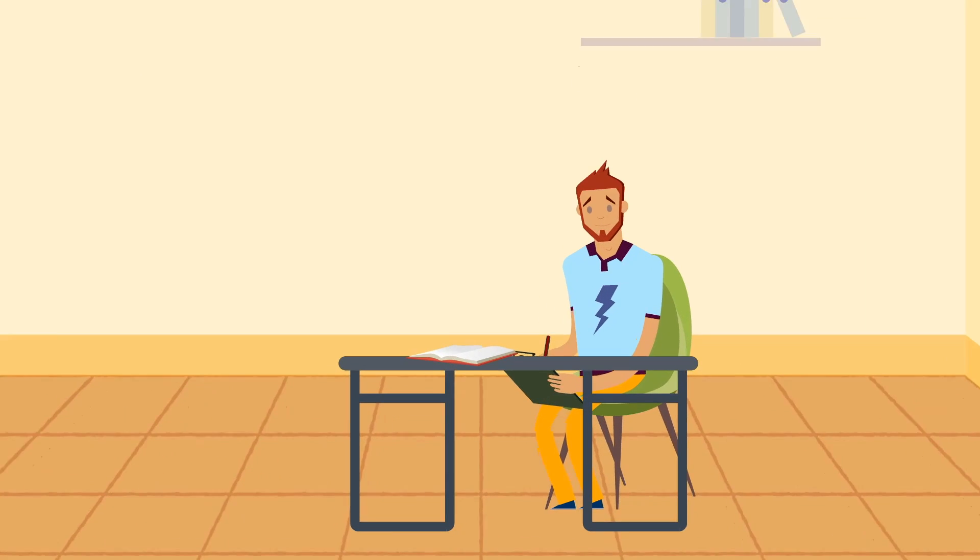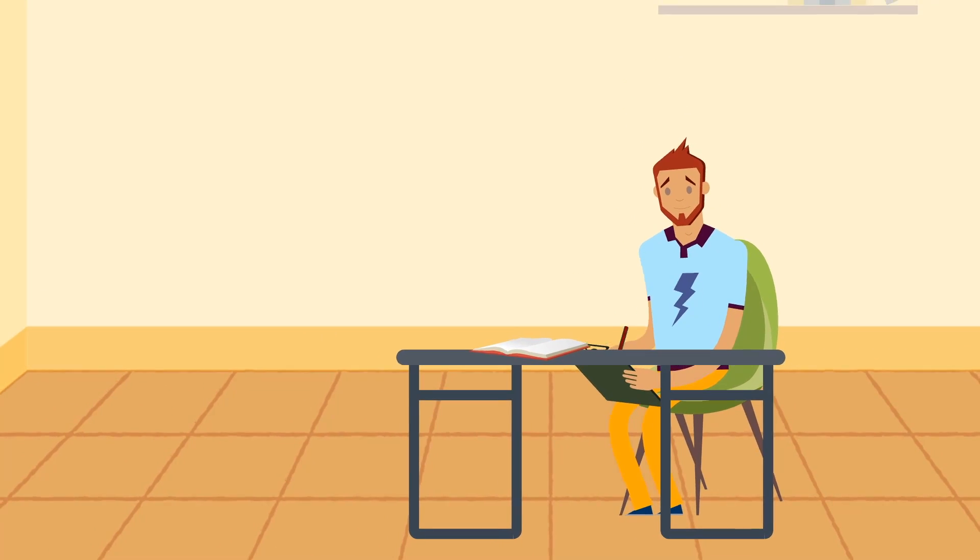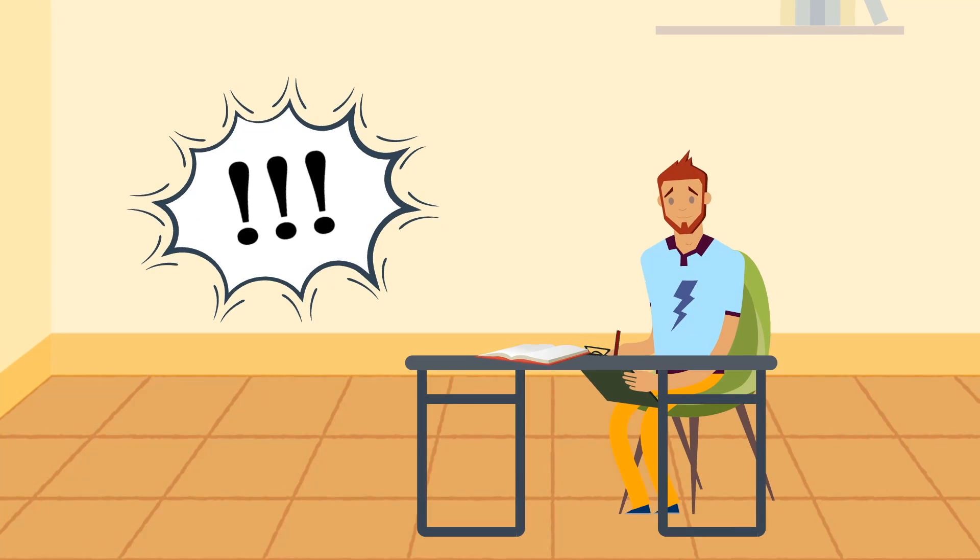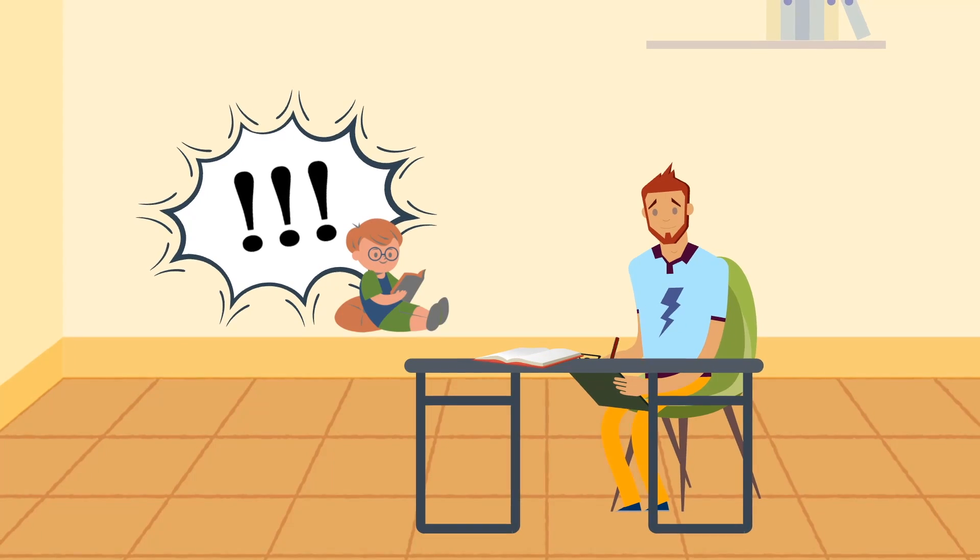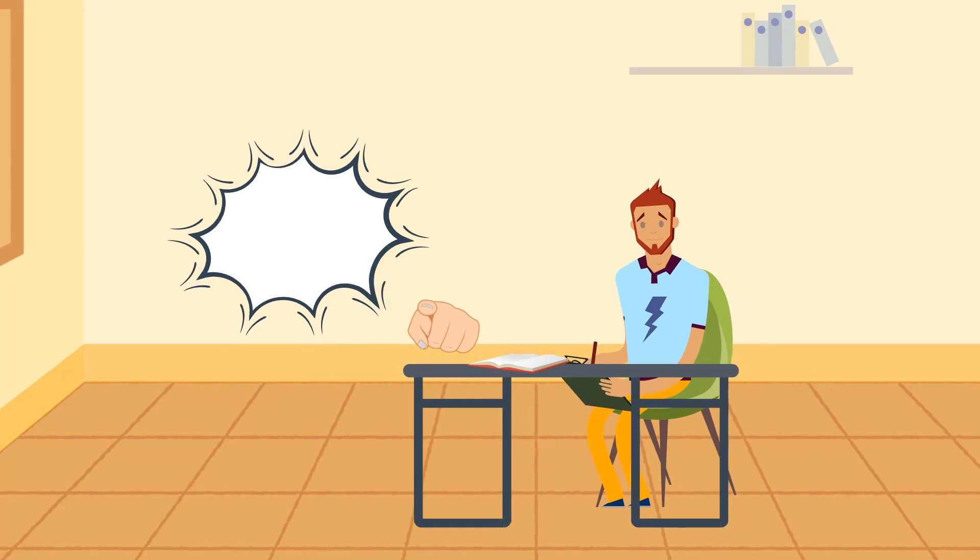For example, consider the student who gets anxious whenever they have to sit for an exam. As a child, their parents placed high expectations on good test scores. When those expectations weren't met, they were subjected to harsh punishment at home or from their peers.